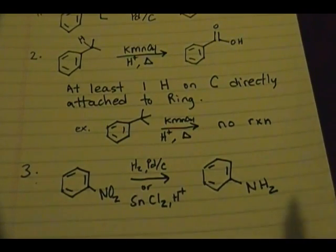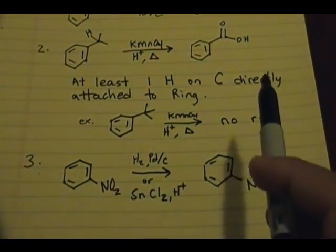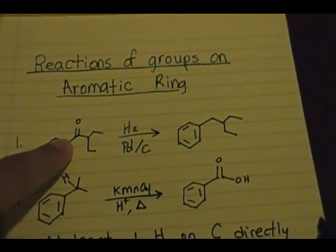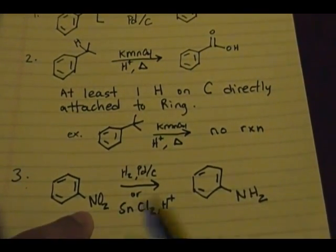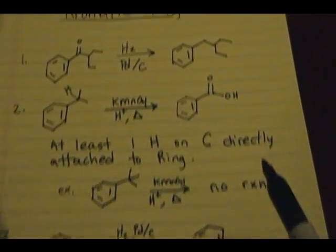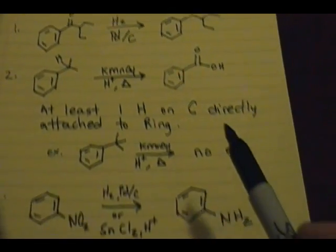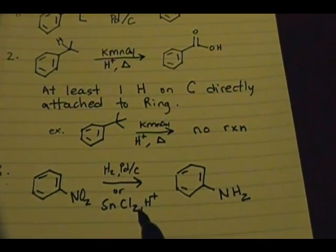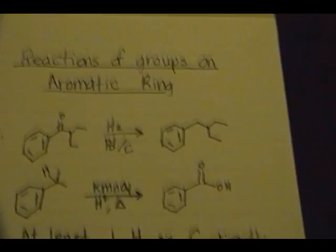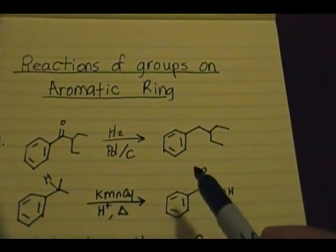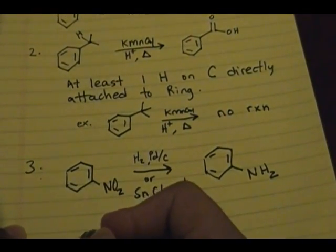Say you have both an NO₂ group and a carbonyl group present on an aromatic ring. If you use H₂ with a palladium-carbon catalyst, it will convert the NO₂ to NH₂ and also completely remove the C=O (deoxygenate the system). However, if you use SnCl₂ and H⁺, it will not affect the carbonyl — it will only change the NO₂ group.